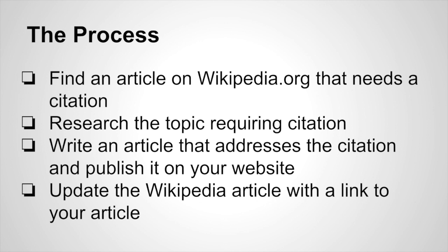Here's an overview of the process of getting a link from Wikipedia. First of all, you need to find an article on Wikipedia that needs a citation. The article you find should be related to your website and the products that you sell. Next, you're going to research a topic that requires a citation, find out enough information, and then write an article that addresses whatever the citation is lacking. You'll publish that article on your website, then go in and update the Wikipedia entry to include a link to that article. This will make Wikipedia essentially give a vote of confidence and trust to your website, which establishes your website as more of an authority.